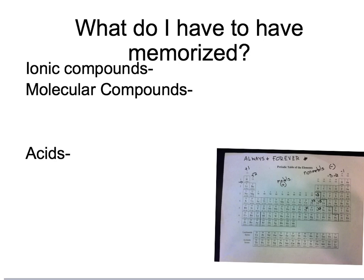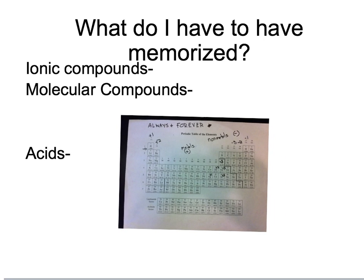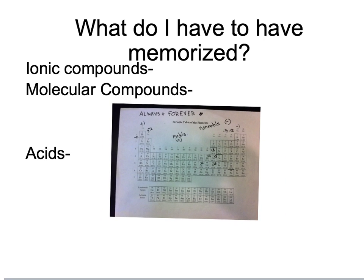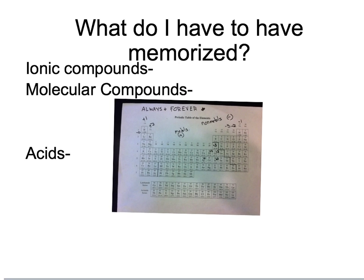I'm going to give you a little review on naming compounds. For your test on Tuesday, you have to be familiar with what you need to have memorized. There are three different kinds of compounds, and for each one there's something you need to have in your head. For ionic compounds, the major thing you need to remember are the charges — plus one for the first column, plus two for the next column, a few transition metals with plus three, plus two, plus one, and then minus one, minus two, minus three on the right side.